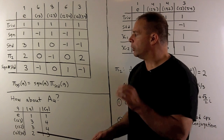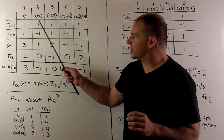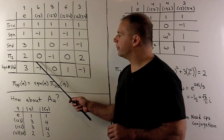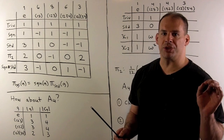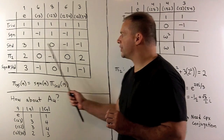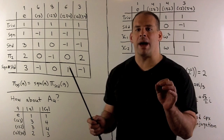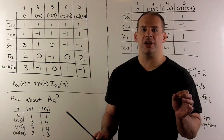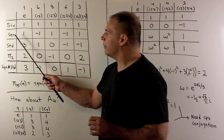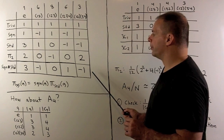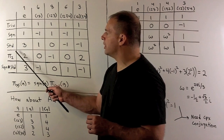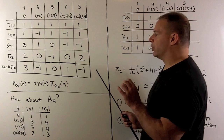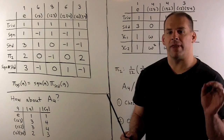For the last irreducible character, the dimension of its representation must be three: the sum of squares of dimensions in the first column must equal 24, and with 1+1+9+4 already accounting for 15, we need a three. Looking for an irreducible three-dimensional representation, we multiply our standard representation by a one-dimensional representation. Multiplying sign by standard gives us something new — the character of the product representation is just the product of the characters. Checking orthogonality confirms we have an irreducible character, completing the table.